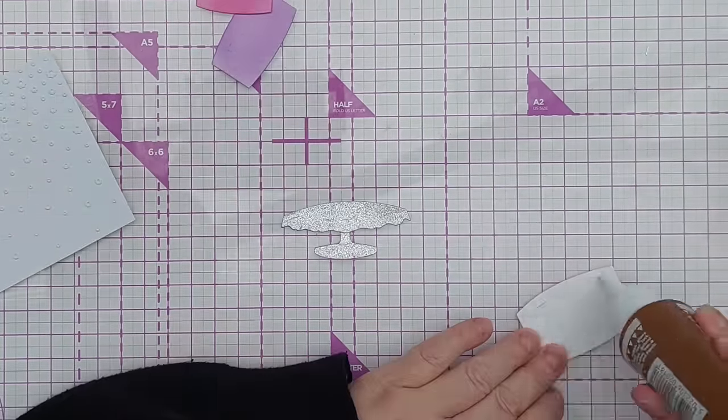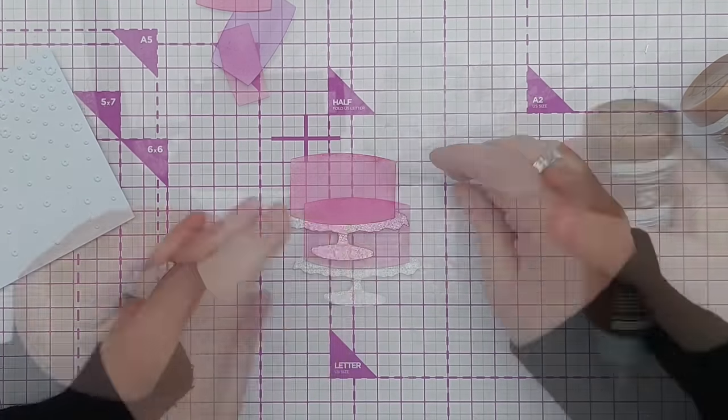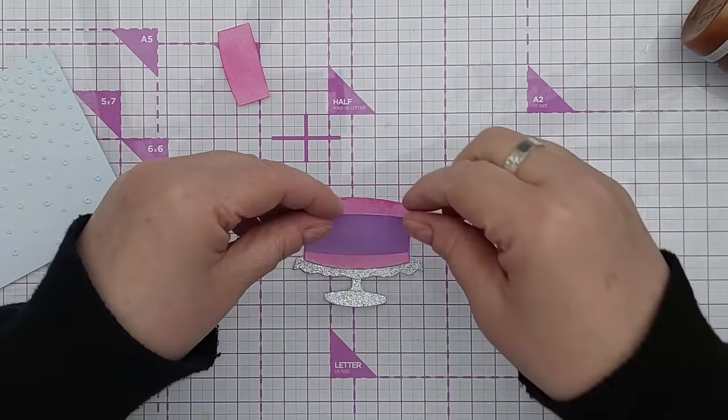Once that was all solidly glued down I added my cake layers, one on top of the other, and then I added my icing.